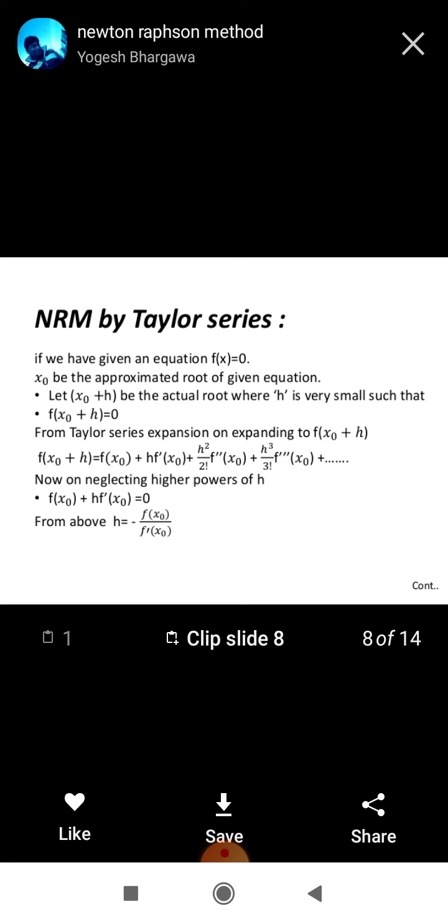Another method for finding the root through Newton-Raphson method, we have equation fx equals 0. So, x0 be the approximated root of the given equation. Let x0 plus h be the actual root. It means f of x0 plus h equals 0.